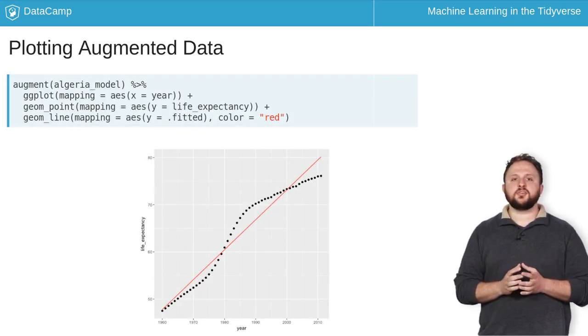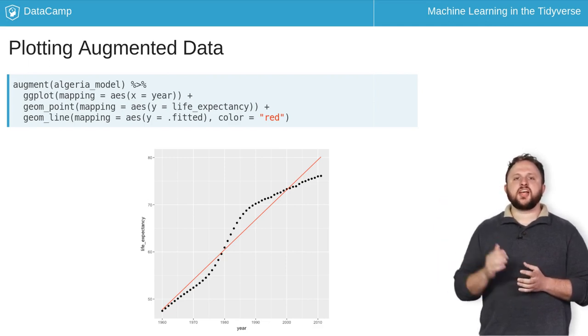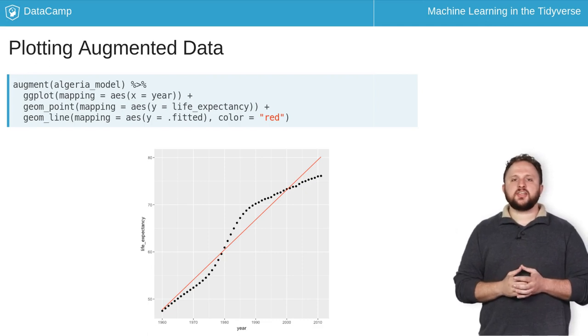For instance, you can visualize how well your model fits the data by plotting the predicted and actual values of life expectancy with respect to year. In this plot, the actual values are the black points, and the fit of the model, or predicted values, is shown as the red line.